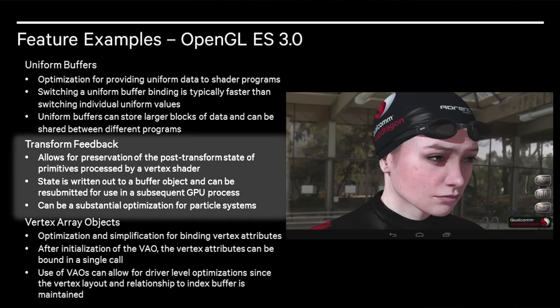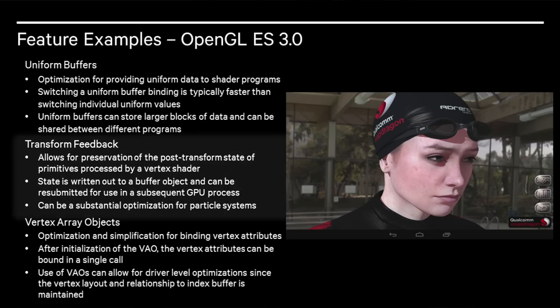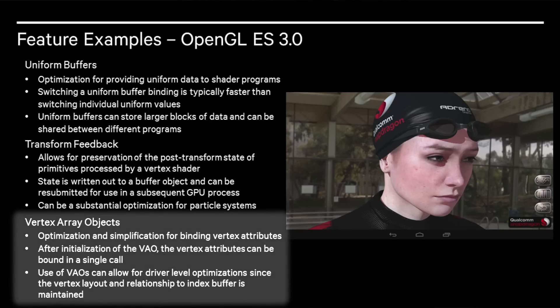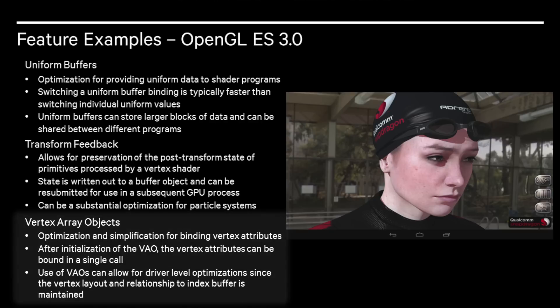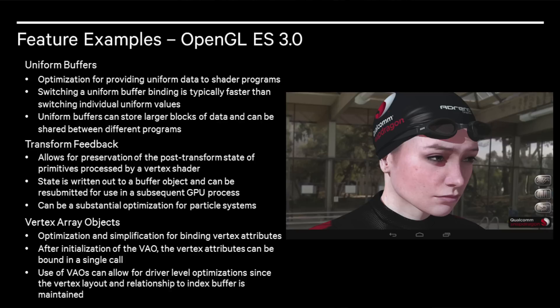Transform feedback allows for the preservation of the post-transform state of primitives processed by a vertex shader. State is written out to a buffer object and can then be resubmitted for use in subsequent GPU processes. This can be used as a substantial optimization for particle systems. Vertex array objects are an optimization and simplification for binding vertex attributes. After initialization of the VAO, the vertex attributes can be bound in a single call. Use of VAOs can allow driver-level optimizations, such as maintaining the vertex layout in relationship to the index buffer.